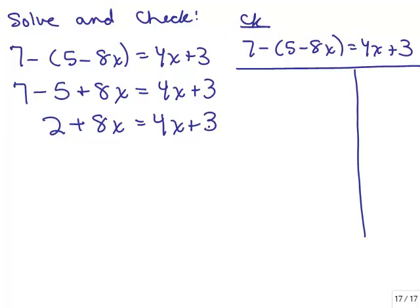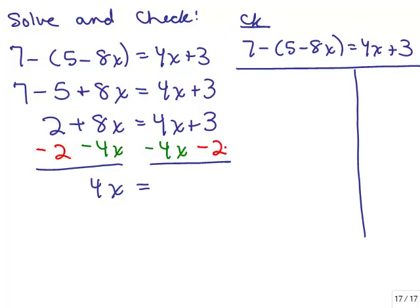Now both sides are simplified, so we solve for x. Subtracting 4x from both sides puts variables on the left. Then subtracting 2 from both sides gives me 3 minus 2 equals 1. Dividing by 4, you're going to get a fraction — the solution looks like one-fourth.